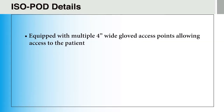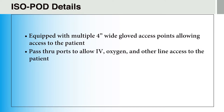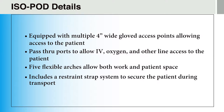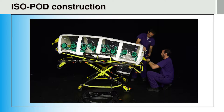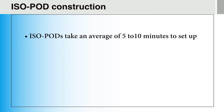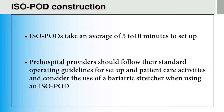The isopod is equipped with gloved access points for access to the patient. Pass-through ports at either end of the pod allow for IV, oxygen, and other line access to the patient. Five flexible arches allow for work and patient space, and a restraint strap system secures the patient during transport. In this video, you can see providers preparing and constructing an isopod for patient transport. Isopods take an average of 5 to 10 minutes to set up. Pre-hospital providers should follow their standard operating guidelines for setup and consider the use of a bariatric stretcher when using an isopod.